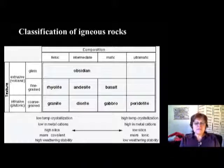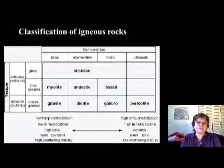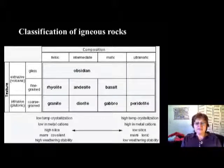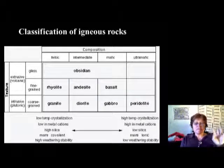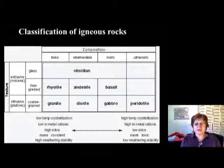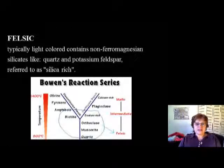Hello, this is the fifth segment of the igneous rock chapter. Last segment I stopped at the classification of igneous rocks. We're going to do the classification based on group names: felsic, intermediate, mafic, ultramafic. Inside the groups we're going to go by texture, because each group will have very similar textures and only the composition is going to be different. Let's start with the felsic rocks.